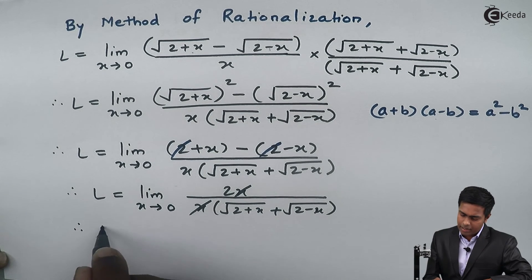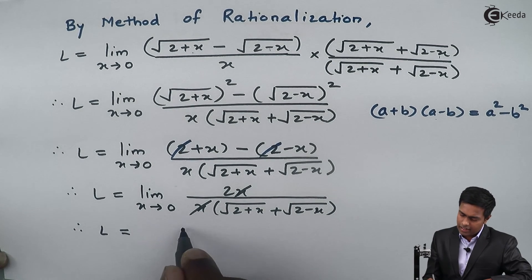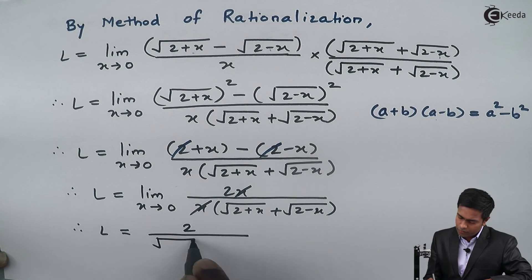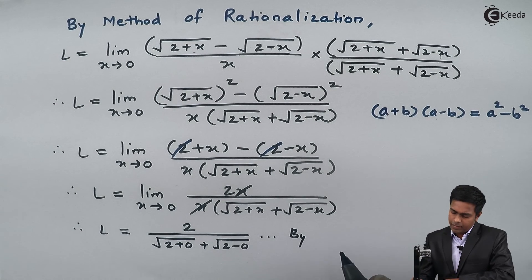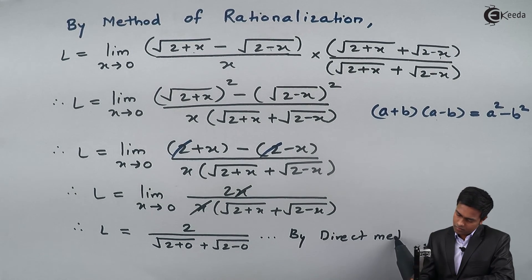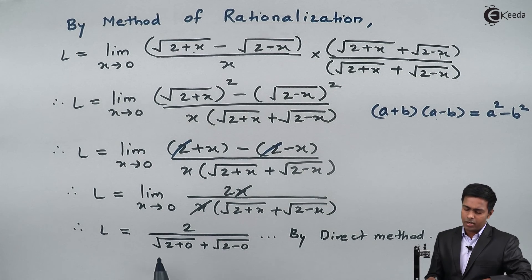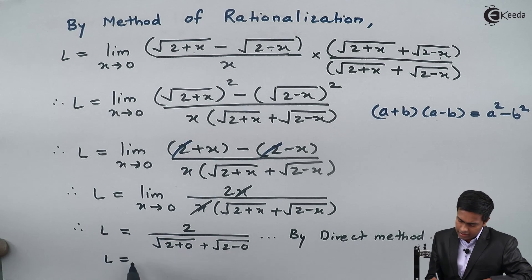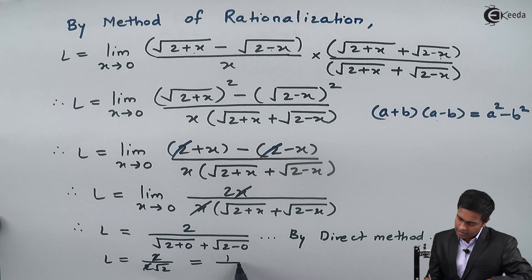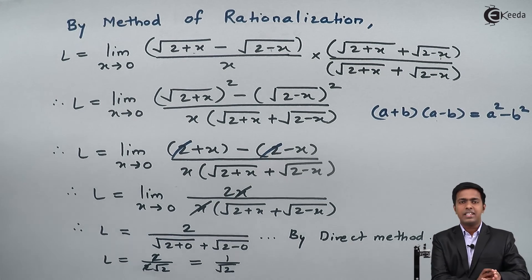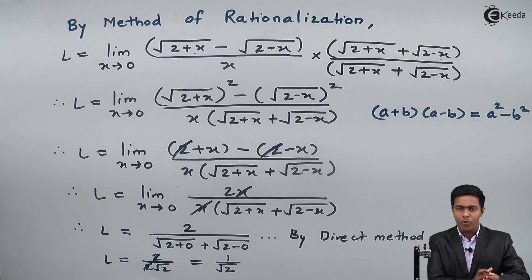By direct method, substituting x equals 0: L equals 2 upon [root(2 plus 0) plus root(2 minus 0)], which becomes 2 upon [root 2 plus root 2], that is 2 upon 2 root 2. Canceling 2 and 2, we get the answer as 1 upon root 2. Hence the value of the given limit is 1 upon root 2.